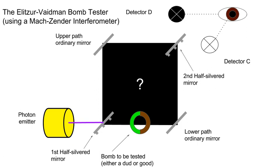Detector D is the key to confirming that the bomb is live. The two detectors and the second half-silvered mirror are precisely aligned with one another. Detector C is positioned to detect the particle if the bomb is a dud and the particle traveled both paths in its superposition and then constructively interfered with itself. Detector D is positioned to detect the photon only in the event of destructive interference — an impossibility. In other words, if the photon is in a superposition at the time it arrives at the second half-silvered mirror, it will always arrive at detector C and never at detector D.